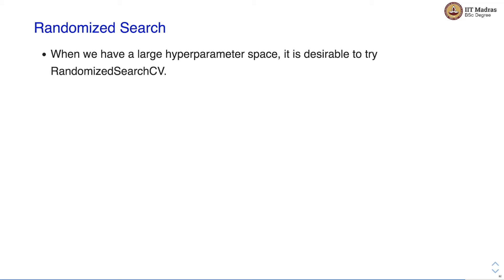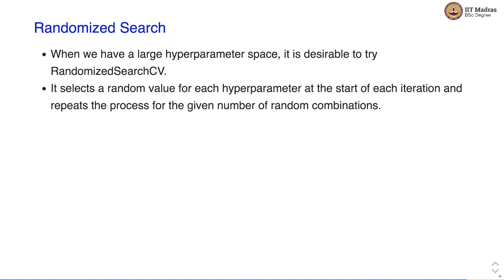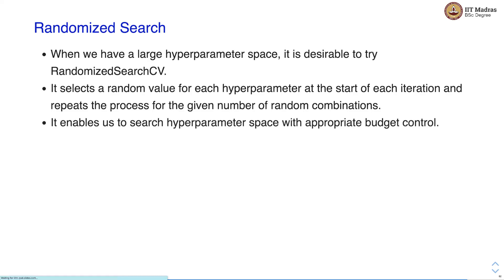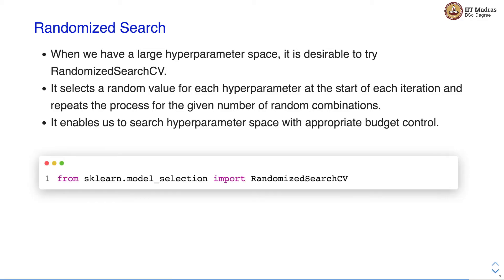The second option provided by the sklearn package is randomized search. When we have a large parameter space, GridSearchCV can be inefficient. In that case it is desirable to try the RandomizedSearchCV class. RandomizedSearchCV selects a random value for each hyperparameter at the start of each iteration and repeats the process for the given number of random combinations. It enables us to search the hyperparameter space with appropriate budget control. We can import the RandomizedSearchCV class from model selection.